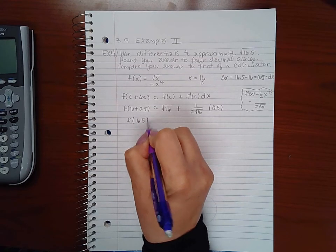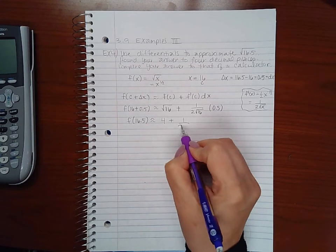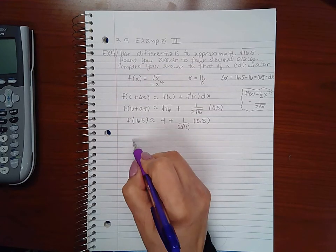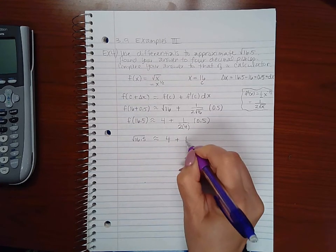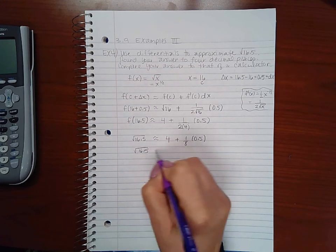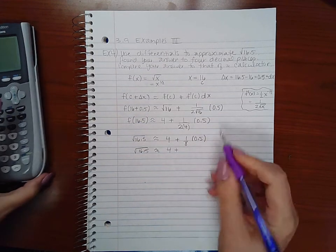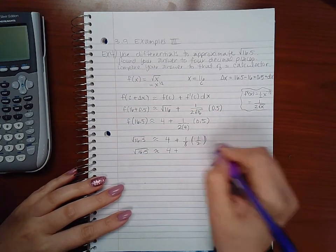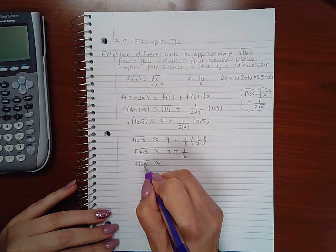So if I combine these, I get f of 16.5 is approximately—square root of 16 is 4, and I get 1 over 8 times 0.5, which is 1 over 16. If you write this as a half, then it would be 1 over 16, which means it's approximately 4.0625.